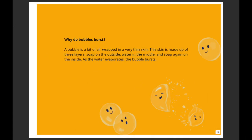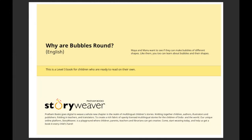Would you also like to know why soap bubbles burst? A bubble is a bit of air trapped in a very thin skin. The skin is made up of three layers: a soap layer on the outside, water in the middle, and soap again on the inside. As the water evaporates, the bubble bursts. So it is made of three layers, and when the water evaporates, the bubbles burst.